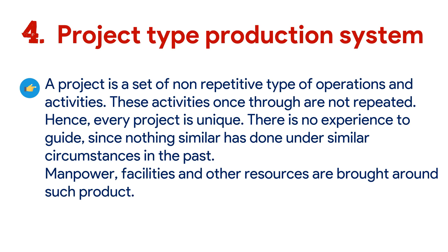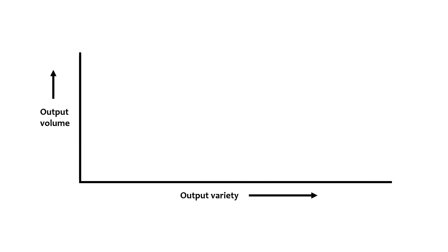So those were the types of production systems. Now let's look at a diagram consisting of all production systems together. On the x-axis we have output variety, and on the y-axis there is output volume. The first production system shown is the continuous flow production system, where output variety is very low but output volume is a little bit high.